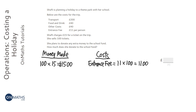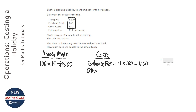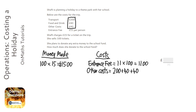All the other costs are just one-off costs. The other costs are going to be 200 plus 40 plus 40, which is going to equal 280.